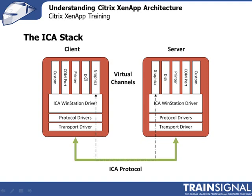The virtual channels are opened by the application. For example, if you want to send a printing file to the server for rendering, you open a virtual channel, transmit that data within the printer virtual channel. It's encapsulated within the ICA wind station driver, goes down to the protocol driver and transmit driver, all packed into a packet and sent to the other side — then decrypted all the way back up. This illustrates how efficient the ICA protocol is: compressing, encrypting, and providing reliability to get packets from point A to point B safely and efficiently.